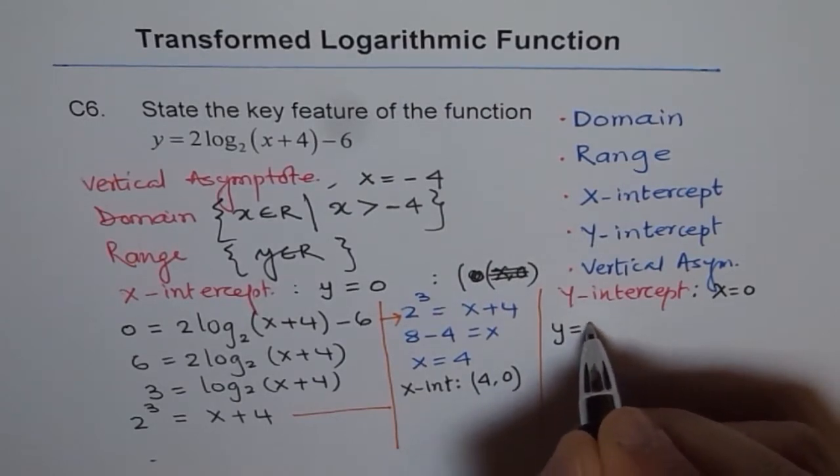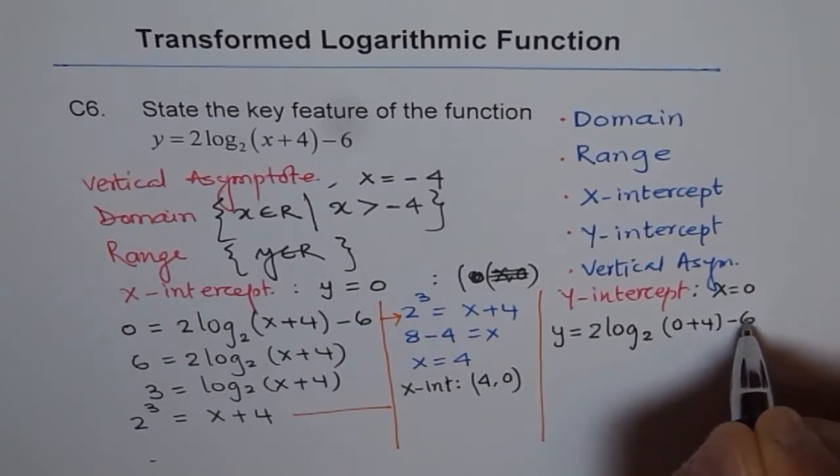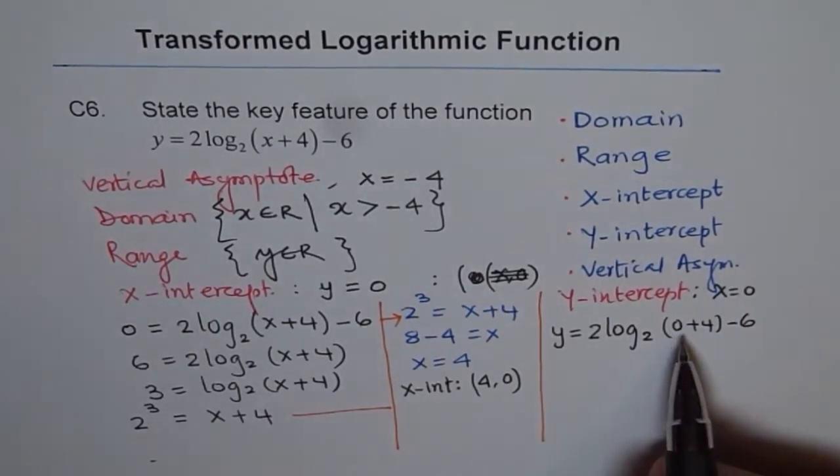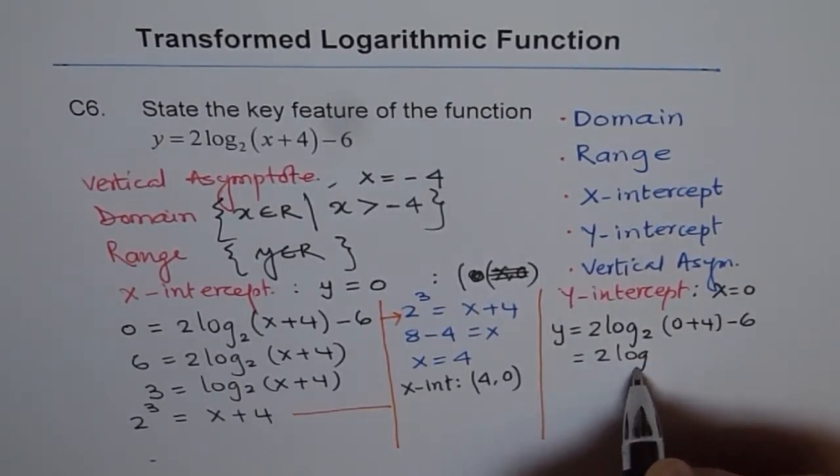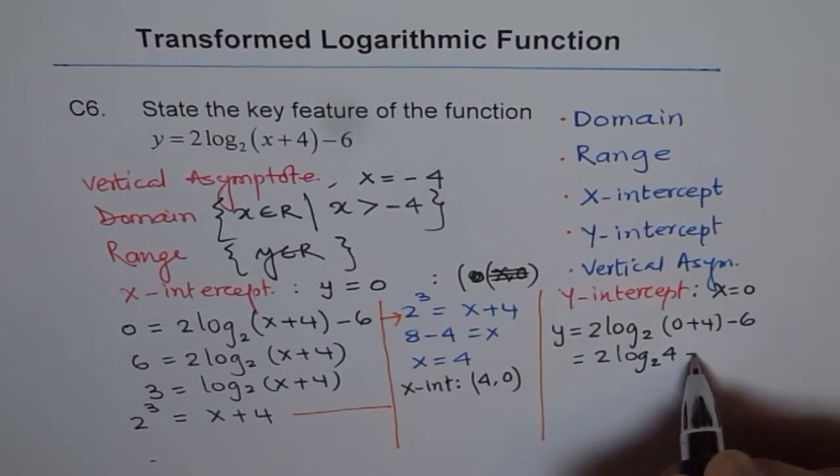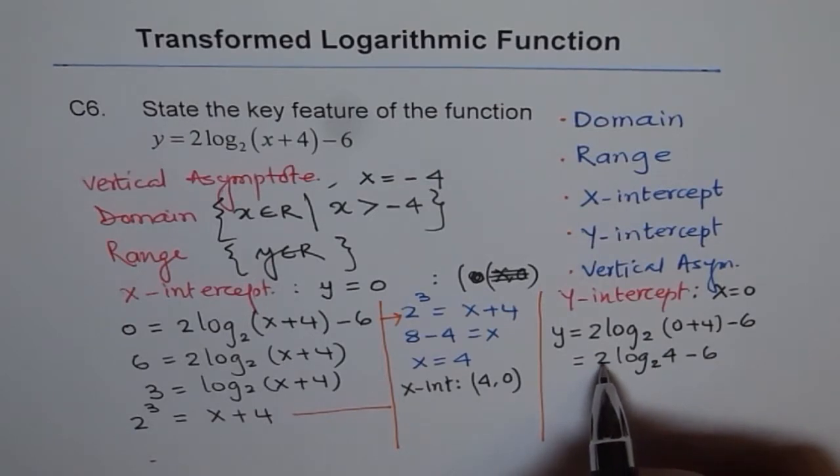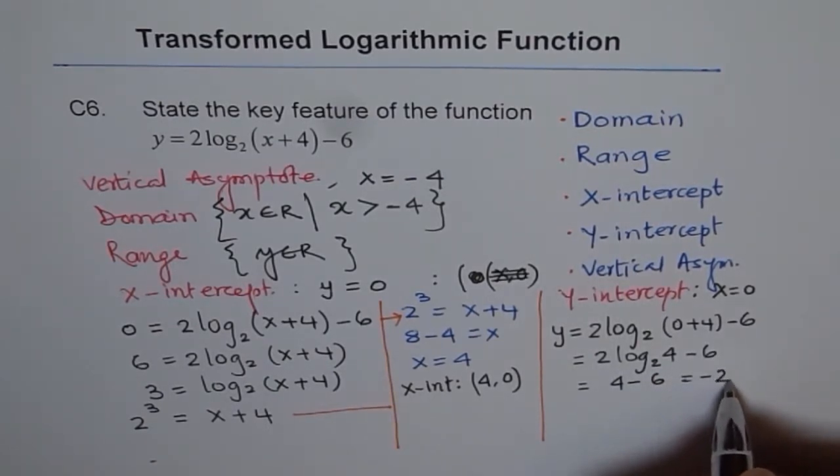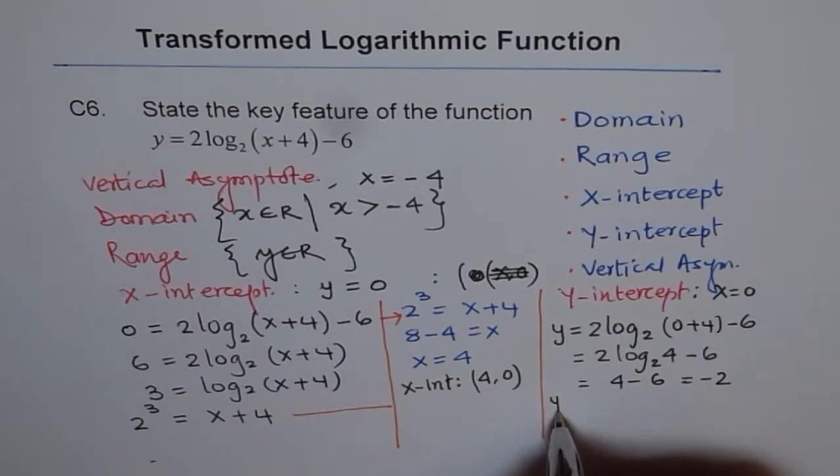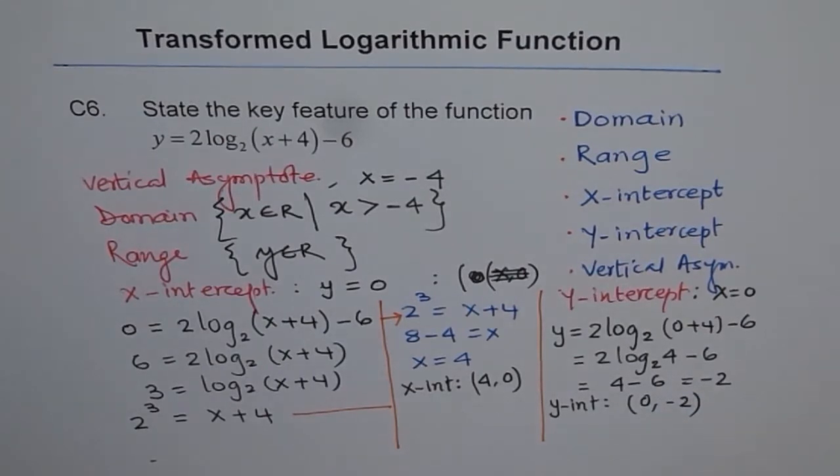So y equals 2 of log 2 of (0 plus 4) minus 6. There's no need to write 0, but I'm writing to show you how I'm getting the result. 2 times log 2 of 4 minus 6. Log 2 of 4 is 2, 2 squared. And that gets multiplied by 2, so we get 4. So we get here 4 minus 6, which gives me minus 2. So y-intercept is (0, minus 2) for this function.